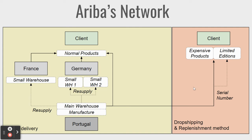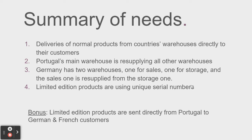We have done the process mapping and we have four scenarios which require a solution. Scenario one — the simplest — is to deliver normal products from the country's warehouses. Scenario two is when Portugal's main warehouse resupplies all the other warehouses, and if needed, Portugal also needs to produce those products. Scenario three digs deeper into Germany and how the two warehouses within one entity would work. Last but not least, scenario four is when limited edition products use serial numbers in the multi-company setup.